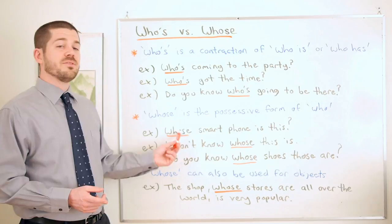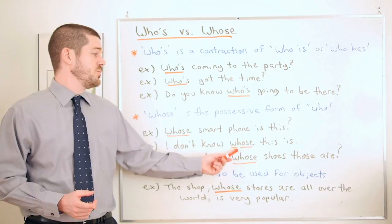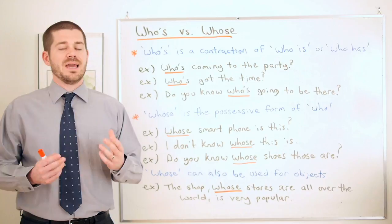And one more: do you know whose shoes those are? So once again, do you know who those shoes belong to? You'll notice after all of the whose in these examples we have a noun: whose smartphone, whose this, whose shoes.